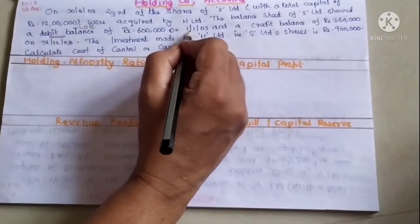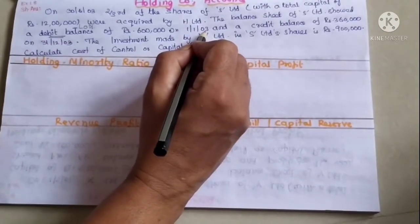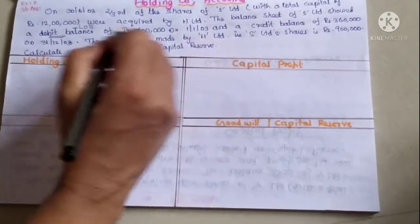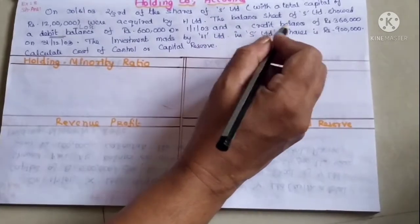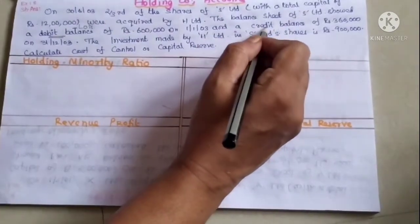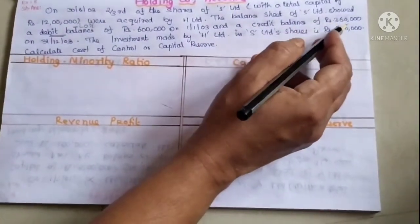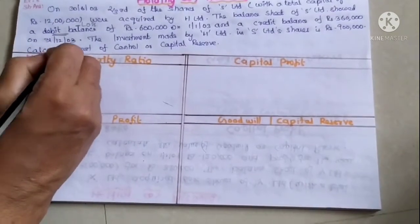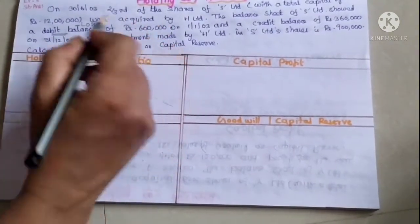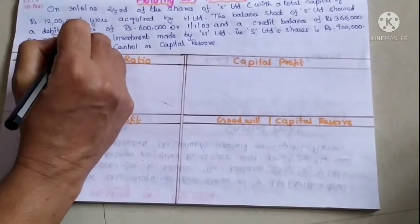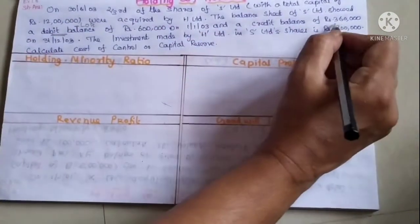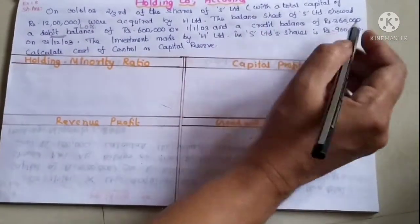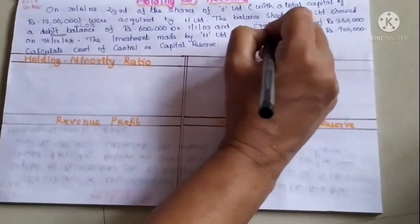On 1st January 2003, there was an opening loss. The closing credit balance on 31st December 2003 is 3,60,000, meaning a profit credit balance at closing.